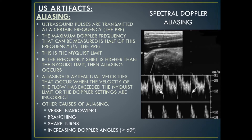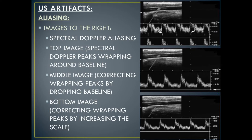Ultrasound pulses are transmitted at a certain frequency, known as the PRF, or pulse repetition frequency. The maximum Doppler frequency that can be measured is half of this frequency — half the PRF. This is known as the Nyquist limit. If the frequency shift is higher than the Nyquist limit, then aliasing occurs. Aliasing is artifactual velocities that occur when the velocity of the flow has exceeded the Nyquist limit or the Doppler settings are incorrect. Other causes of aliasing include vessel narrowing, branching, sharp turns, or the use of increasing Doppler angles or angles above 60 degrees. Spectral Doppler aliasing is displayed on the ultrasound as the peaks of the waveform crossing over the baseline or wrapping around.